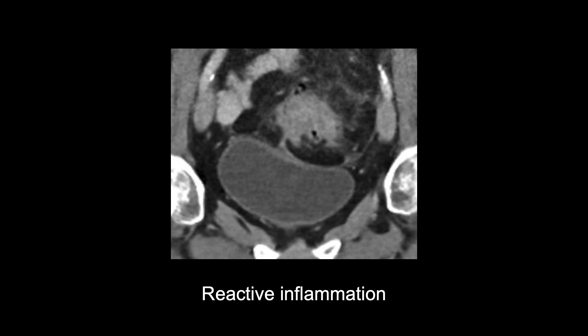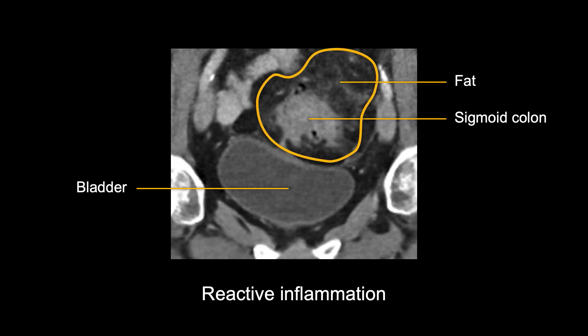In this example, the bladder is compressed and mildly thickened as a result of the inflamed sigmoid colon. Notice the hazy fat stranding around the colon in this image as well, further supporting the presence of inflammation.